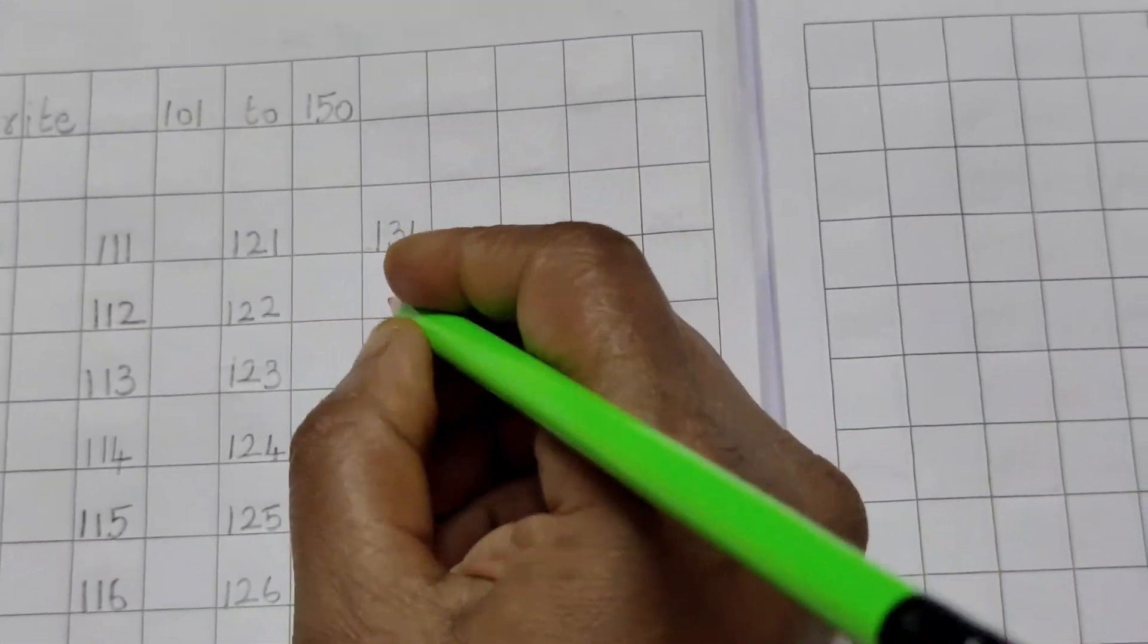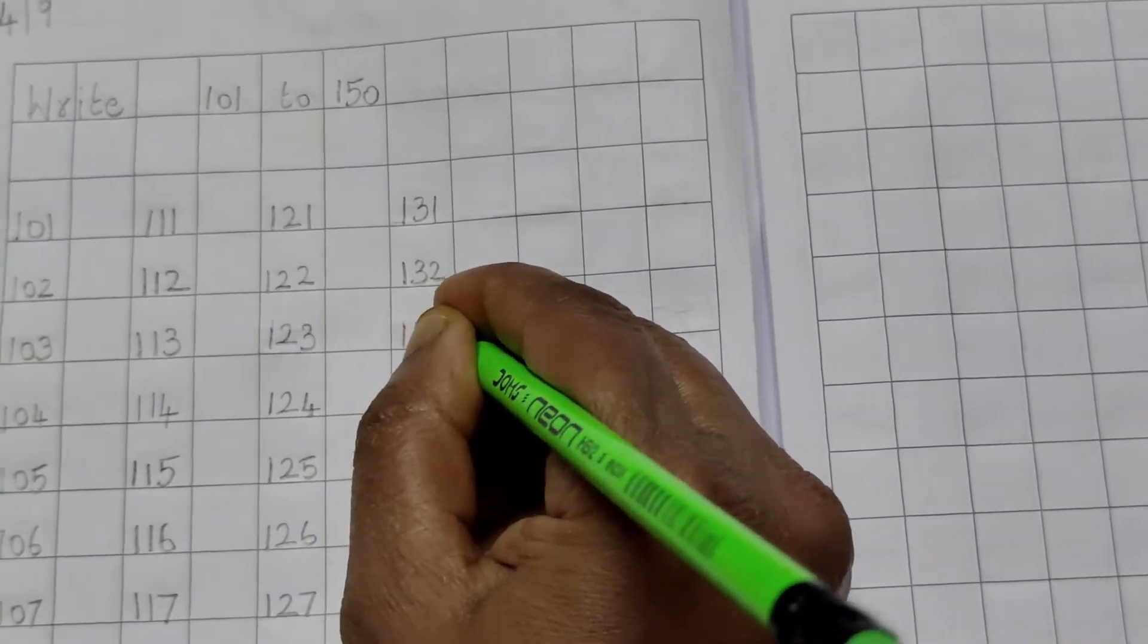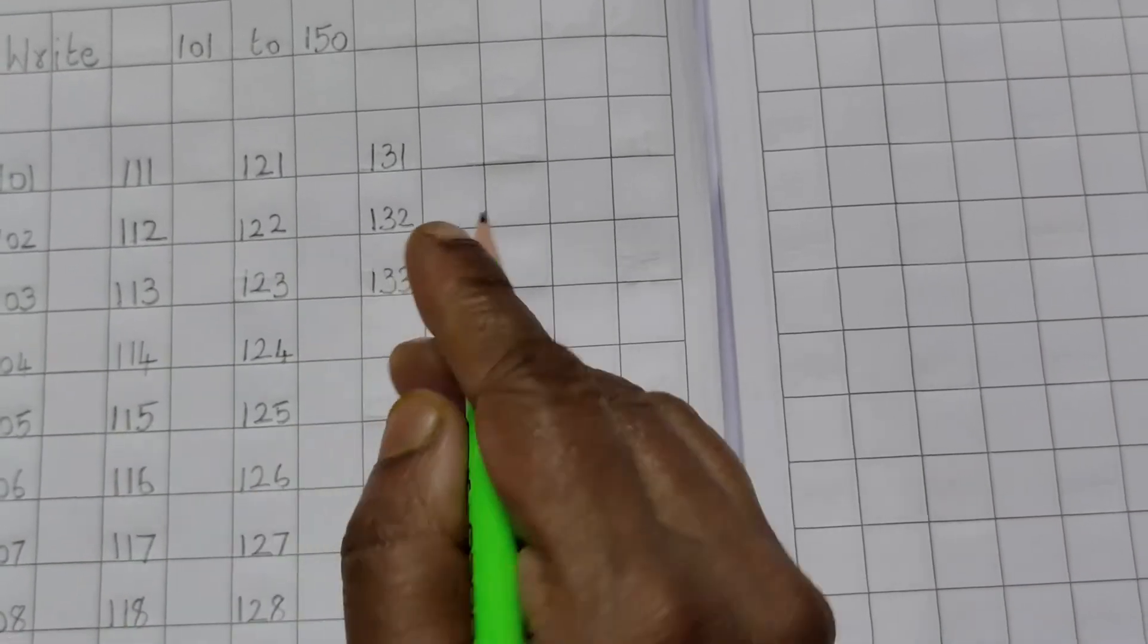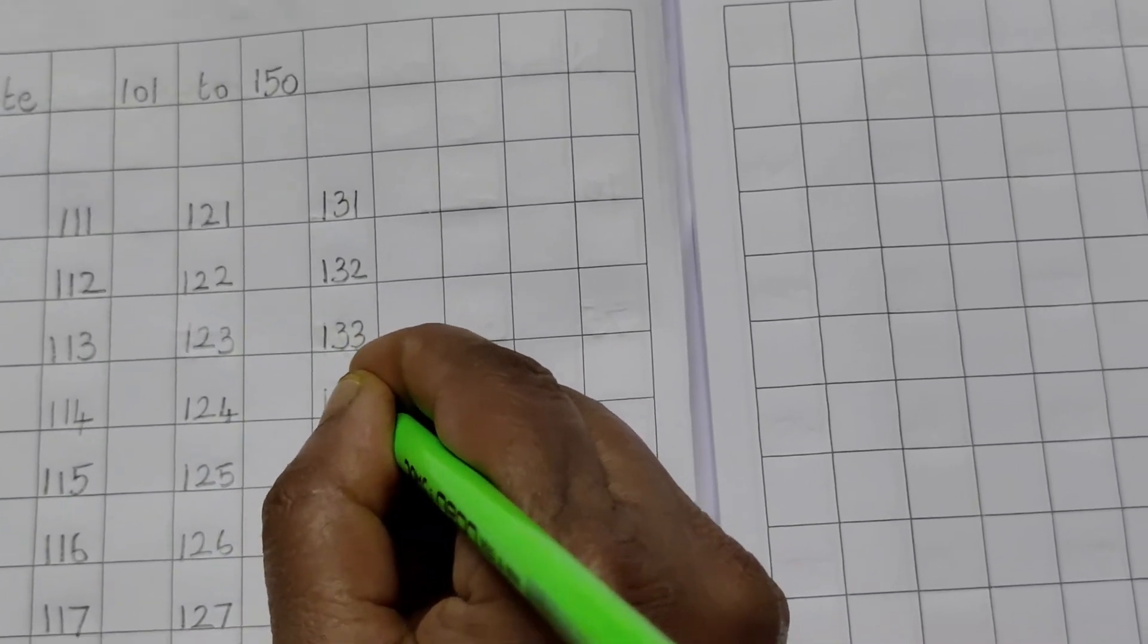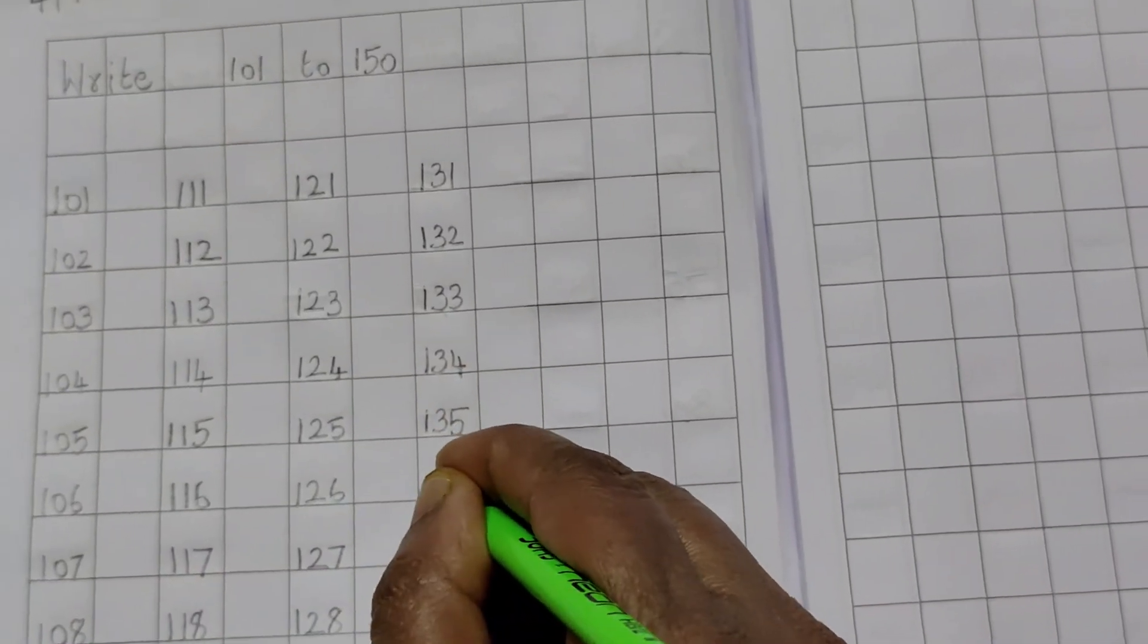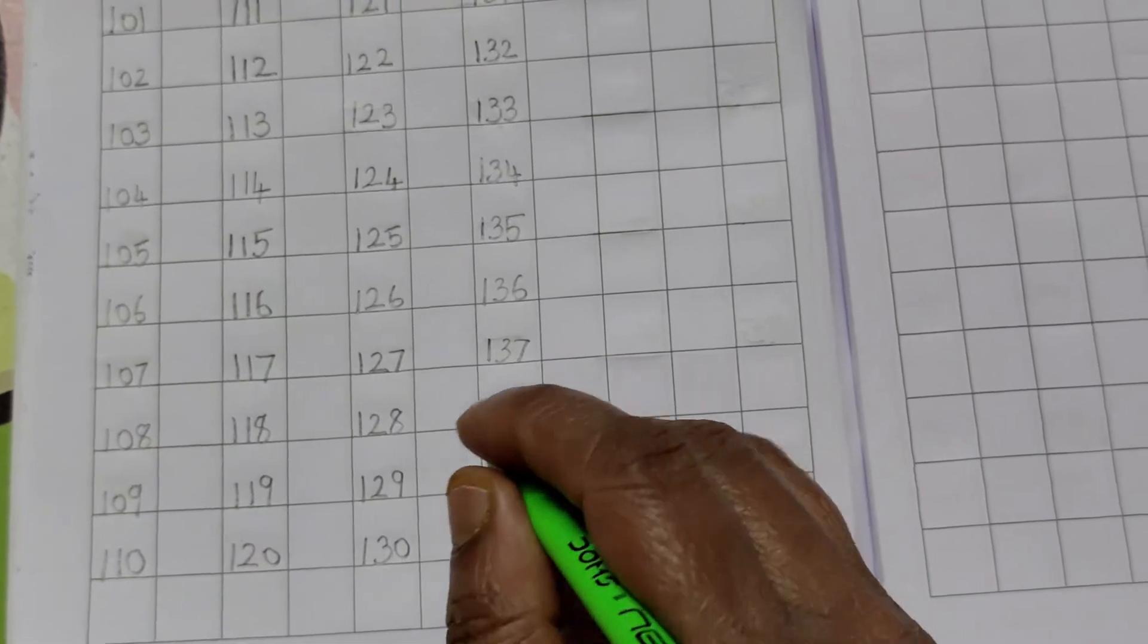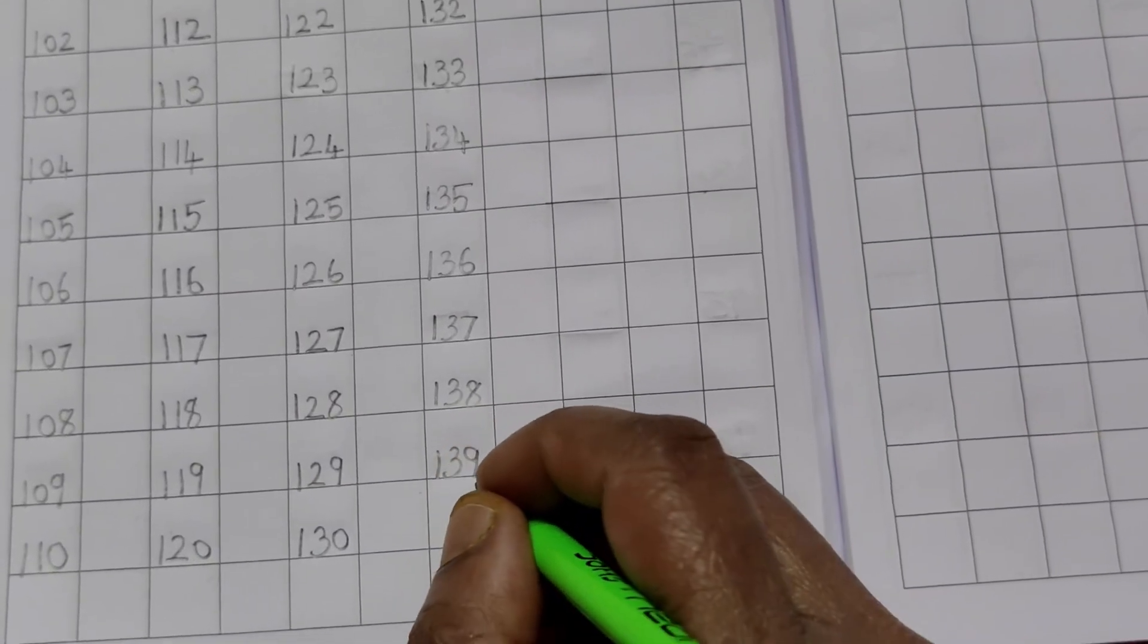131, 131, 132, 132, 133, 133. If you are not writing this 1, it will become a 2 digit number children. So don't forget to write 1. Start with 1. Otherwise it's a 2 digit number. 134, 134, 135, 135, 136, 136, 137, 137, 138, 138, 139, 139.